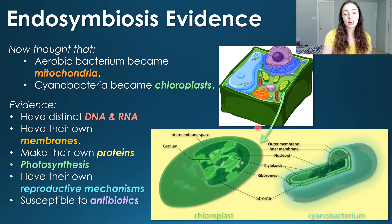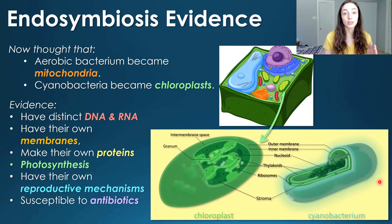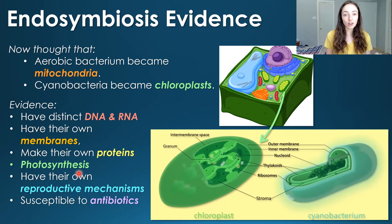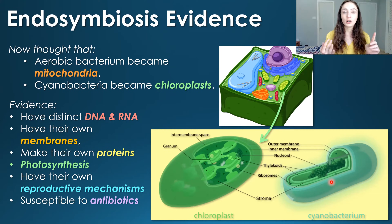Another piece of evidence: chloroplasts not only share shockingly similar traits with cyanobacteria, but they also perform oxygenic photosynthesis, which has been carried out by cyanobacteria for billions of years on Earth and is unique to either cyanobacteria or things containing chloroplasts that used to be cyanobacteria.